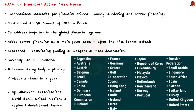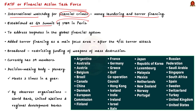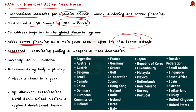Our next topic is the Financial Action Task Force (FATF). FATF is an international watchdog on financial crimes such as money laundering and terror financing. It was established at the G7 summit of 1989 in Paris to address loopholes in the global financial system, mainly after member countries raised concerns about growing money laundering activities. FATF also added terror financing as a main focus area after the 9/11 terror attack on the US, and this was later broadened to include restricting the funding of weapons of mass destruction. FATF currently has 39 members. The decision-making body of FATF, called its plenary, meets three times a year and is attended by observer organizations such as the World Bank and Regional Development Banks.